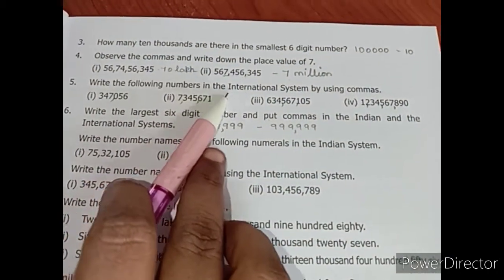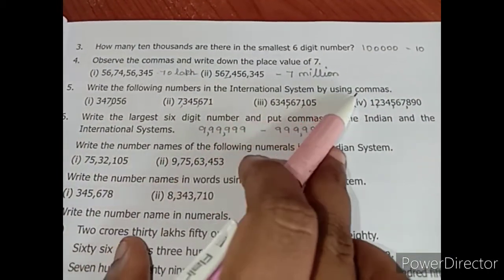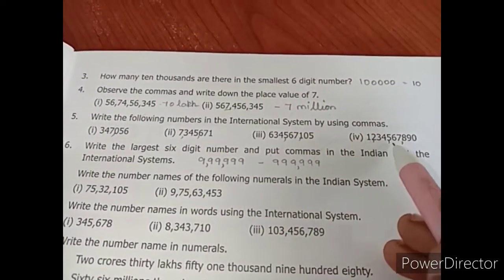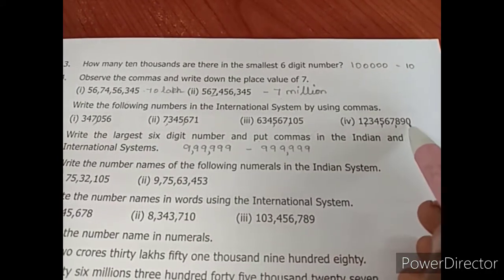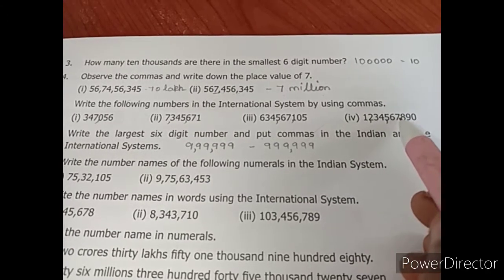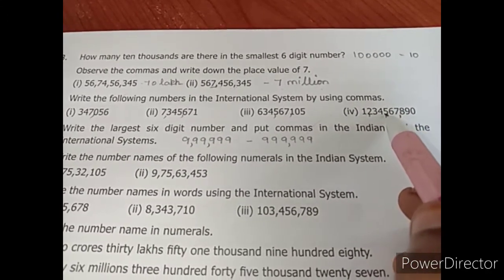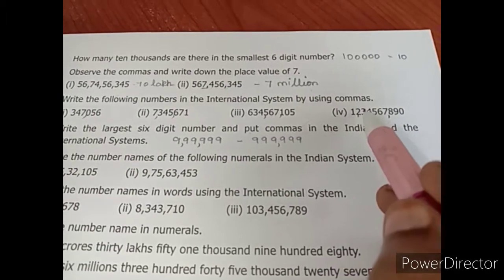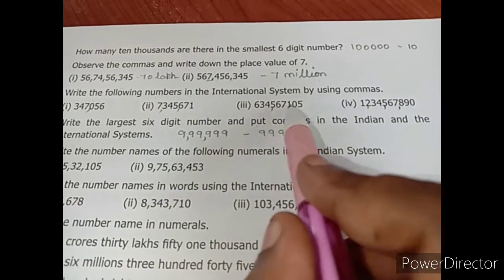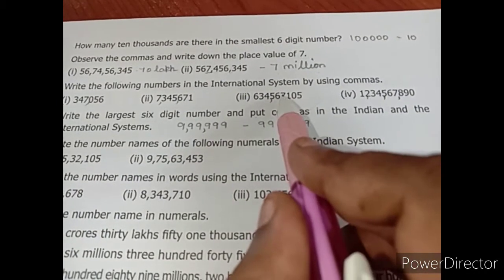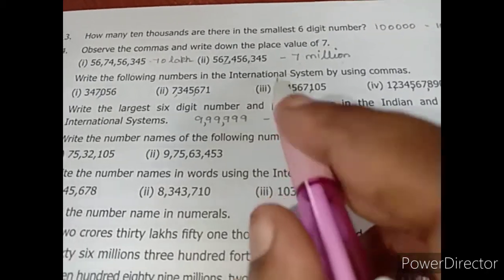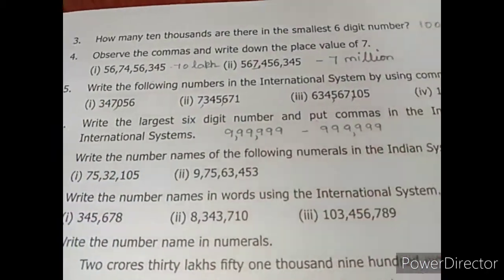Write the following numbers in the international system by using commas. It is very simple — we have to separate the numbers using commas in groups of three: ones, hundred, comma, thousand, ten thousand, hundred thousand, comma, million, ten million, hundred million, comma, billion. Likewise, you have to follow this pattern for all given numbers.